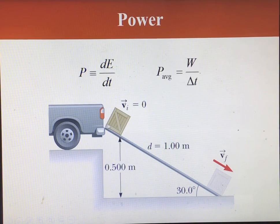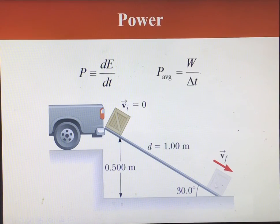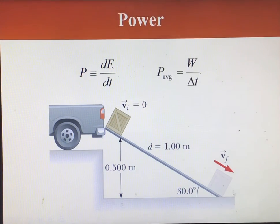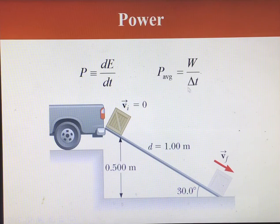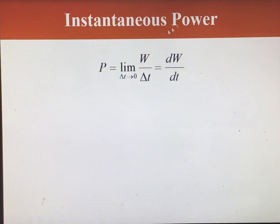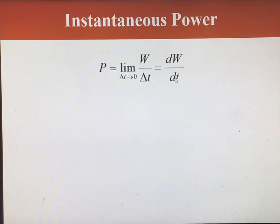For example, if we calculate the work — how much work do we need to do to move this object from one point to another — and if we know the time it takes this crate to go from point A to point B, then work divided by time gives us the average power. We can also define the instantaneous power as the limit as time goes to zero of work over change in time, which is just the derivative of the work with respect to time.